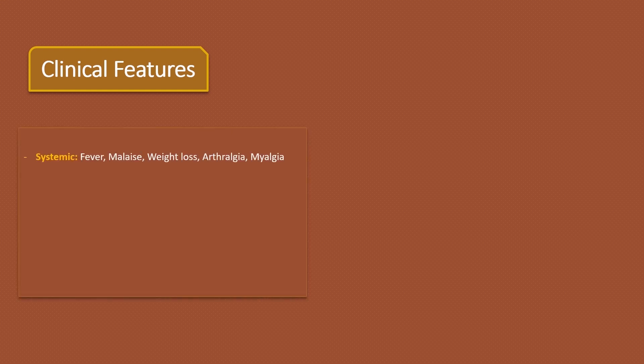Clinical features depend on the involved organ. Systemic symptoms include fever, malaise, weight loss, arthralgia, or myalgia. Skin involvement may present with purpura, ulcers, livedo reticularis, nail bed infarcts, or digital gangrene.